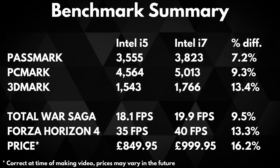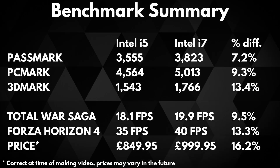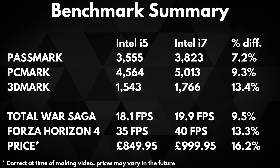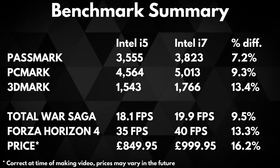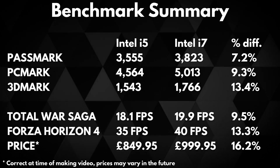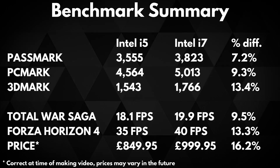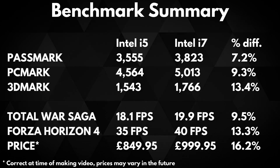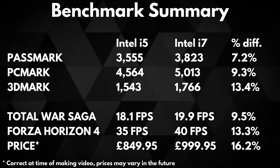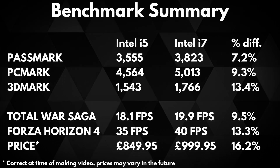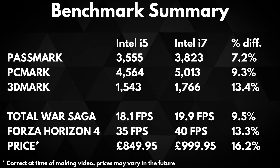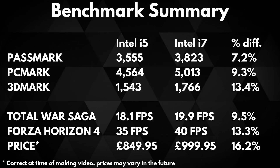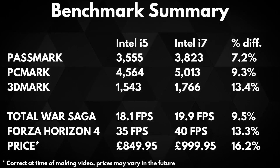PCMark shows a difference of around 9.3% in benchmarking day-to-day tasks such as web browsing, using office software, video conferencing and software loading speed. 3DMark shows a difference of around 13.4% while testing gaming performance on the CPU and GPU. Total War Saga: Troy shows a difference of around 9.5%, and Forza Horizon 4 shows a difference of 13.3%, both with default ultra graphics settings.